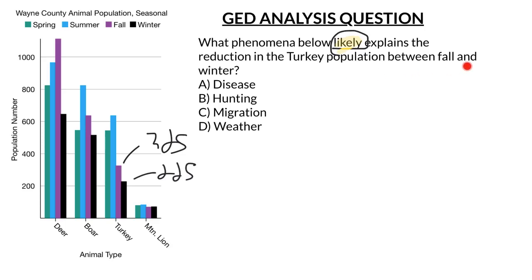Here are our answers. Disease — that's one option, but you don't really have any information in the chart that speaks to disease, so we're not going to focus on that one. Hunting — well, that's certainly possible, because we know that turkey season tends to be in this part of the year. In the United States we celebrate Thanksgiving and need turkeys for Thanksgiving dinner, so that could certainly be a reason. We're going to give that a positive mark.